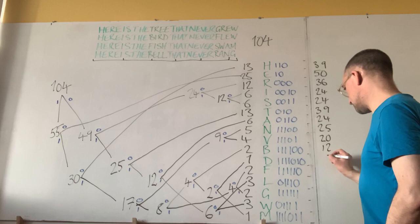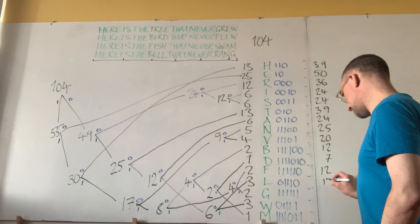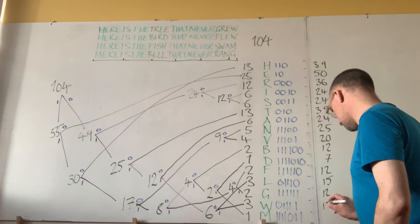For F, we have 2 6s, again that's 12. For L, we have 3 5s, that's 15. 2 6s for G, another 12. 3 5s for W, another 15. And for M, we have another 7.